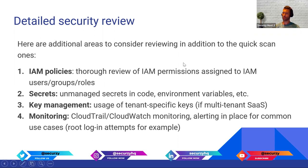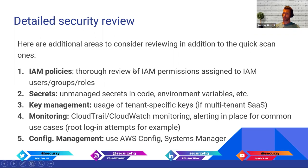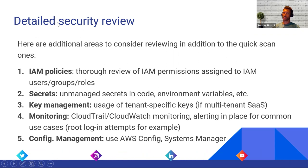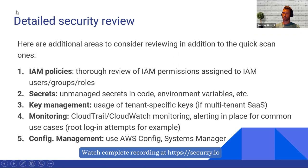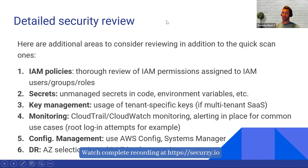Is there anything to detect configuration or compliance issues? For example, if there is an EC2 volume on EBS which is not encrypted, or if someone changed the encryption settings, is there any detection for that? That can be done with AWS Config. Systems Manager can also help with that — so are you using these tools?